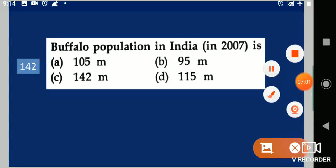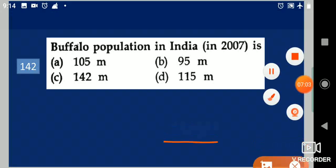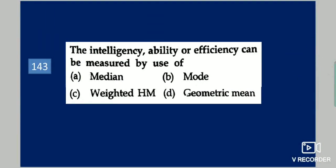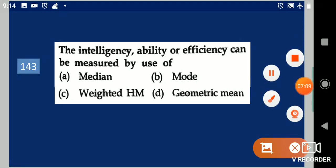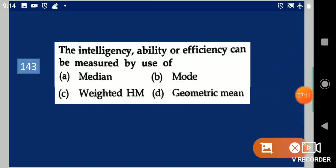Next question: Intelligence, ability, or efficiency can be measured by use of dash. Your options are: median, mode, weighted HM, harmonic mean, or geometric mean. Your answer is median.